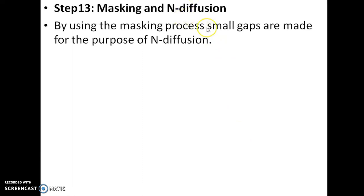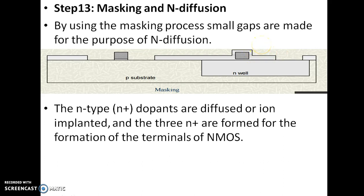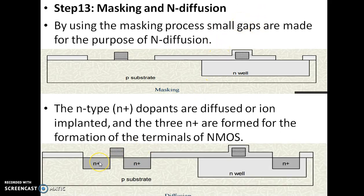Next step is masking and N-diffusion. By using the masking process, small gaps are made for the purpose of N-diffusion — two holes are created in the P-type substrate for the drain and source terminals of NMOS, and one hole is created in the N-well for the body terminal of PMOS. The N-type dopants are diffused or ion implanted, and three N-plus regions are formed: one for the drain of NMOS, one for the source of NMOS, and one for the body of PMOS.